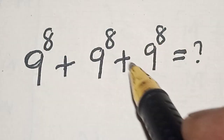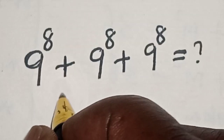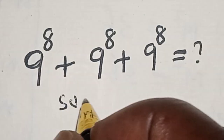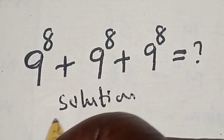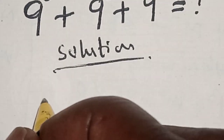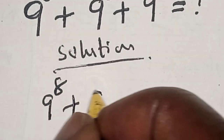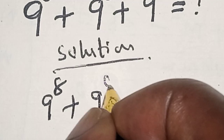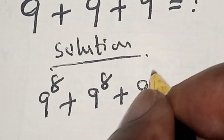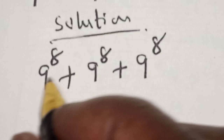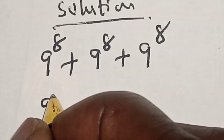Please don't forget to like, share, comment and subscribe. This is a sum of powers solution. We have 9 raised to power 8 plus 9 raised to power 8 plus 9 raised to power 8. Since 9 raised to power 8 is common, let's bring it out.